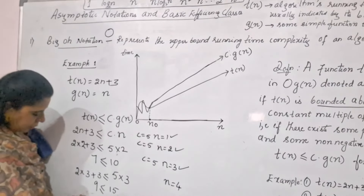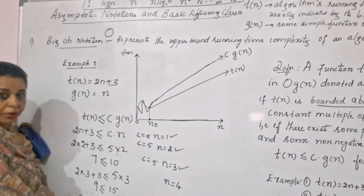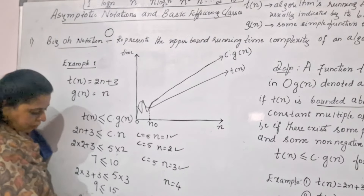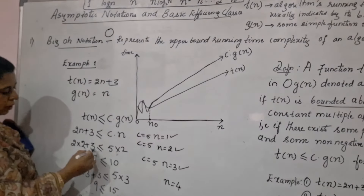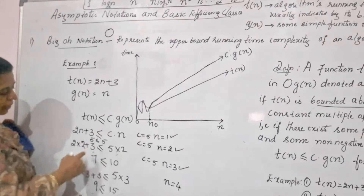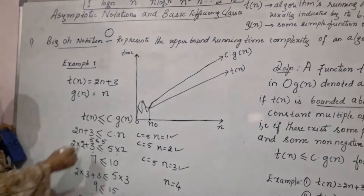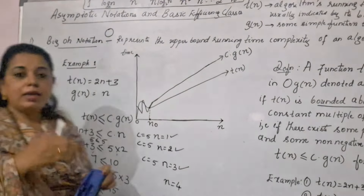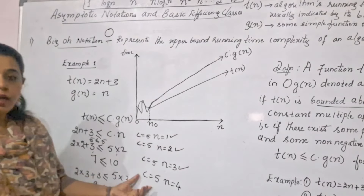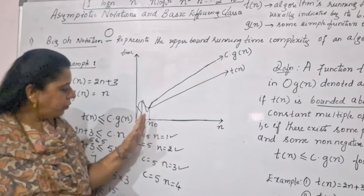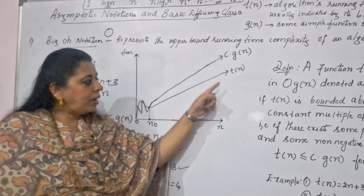So looking at the sequence: for n = 1 we got 5 ≤ 5; for n = 2, 7 ≤ 10; for n = 3, 9 ≤ 15; for n = 4, 11 ≤ 20. The left-hand side values are 5, 7, 9, 11 — increasing in a linear manner. We have decided that for c = 5 and n = 1 onwards, c·g(n) is always above the function t(n). The value of n where we first verified this — n = 1 — becomes our n₀.